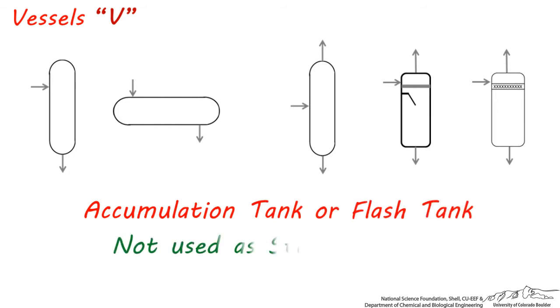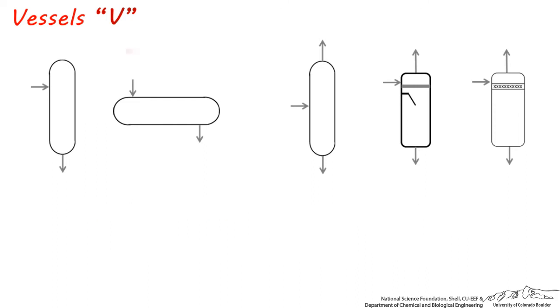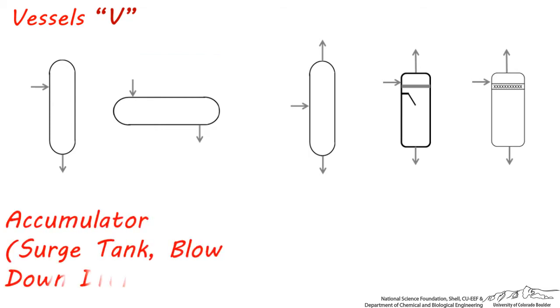Vessels usually represent accumulation tanks or flash tanks. However, vessels should not be confused with storage tanks. Vessels are process units, which means they have a process stream going through them and are not used for longer term storage. These first two vessels are accumulators, also sometimes called accumulation tanks, surge tanks, or blowdown drums.